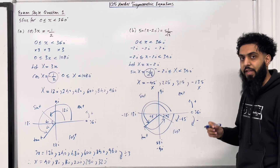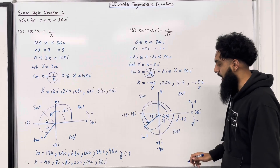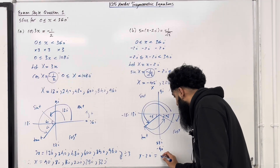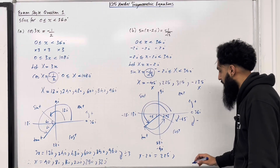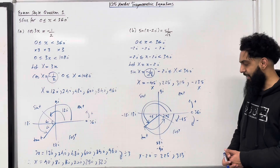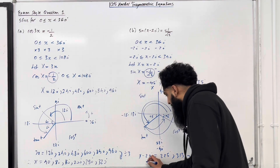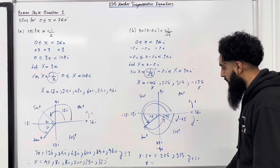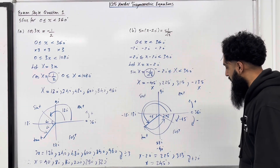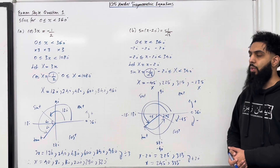We're solving for lowercase x, so we replace capital X with x minus 20. So x minus 20 degrees equals 225 degrees and 315 degrees. Adding 20 to both solutions gives x equal to 245 degrees and 335 degrees. That completes exam style question 1.